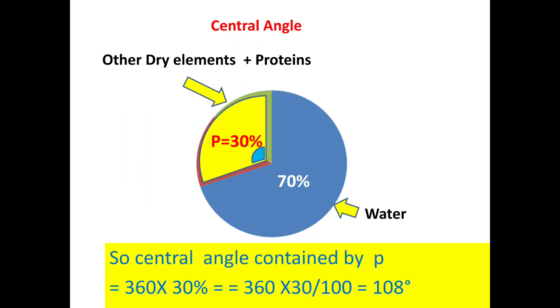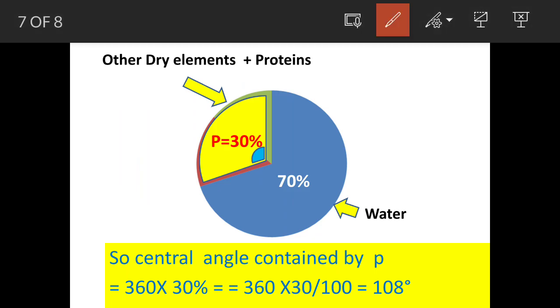The angle contained by P will be 30% of 360 because the entire angle is 360 and the P represents 30% of the circle. So 108 degrees is the answer.